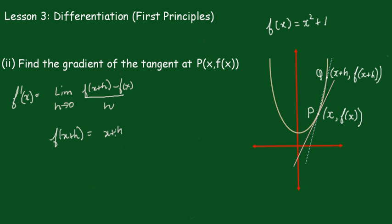f(x+h) = (x+h)² + 1, which equals x² + 2xh + h² + 1. Now f(x) is x² + 1.